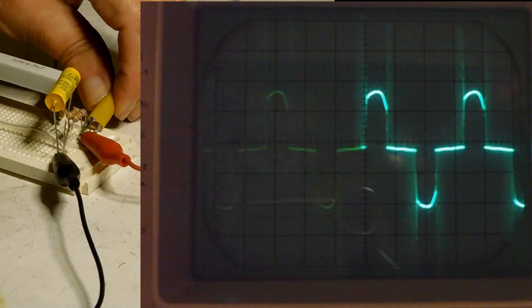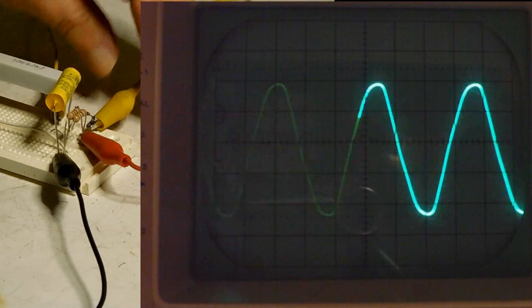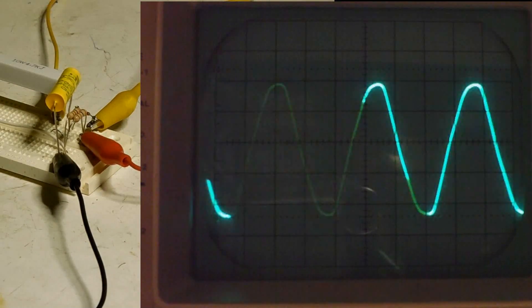Now I'm going to short out the DIAC, and of course we'll see the sine wave across that 50 ohm load.